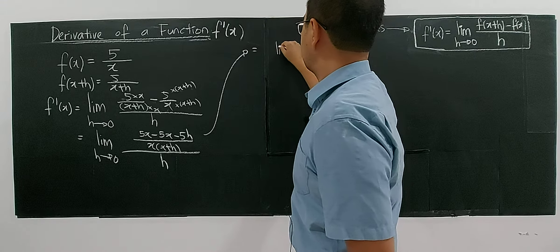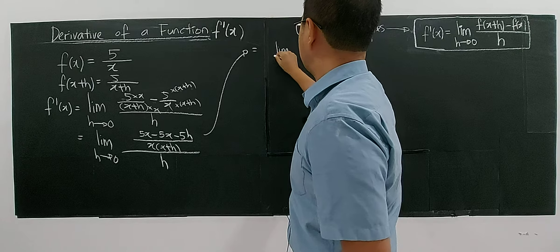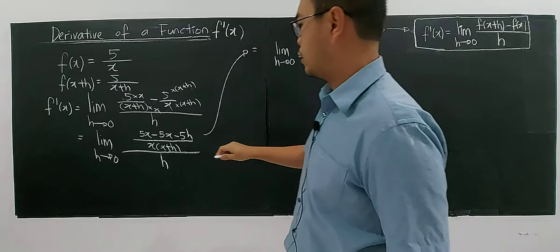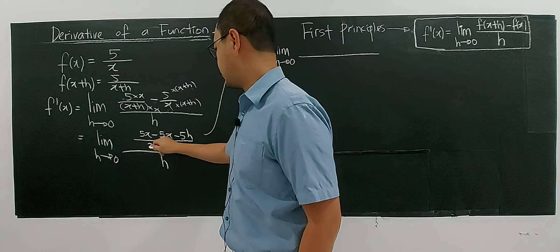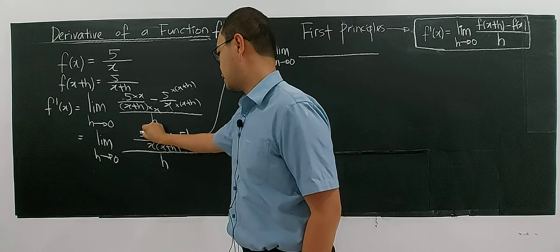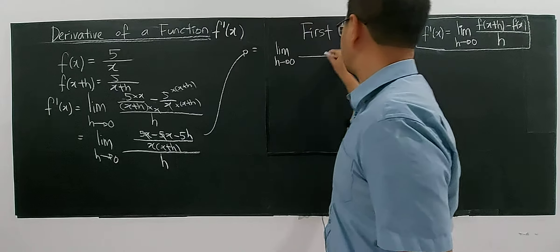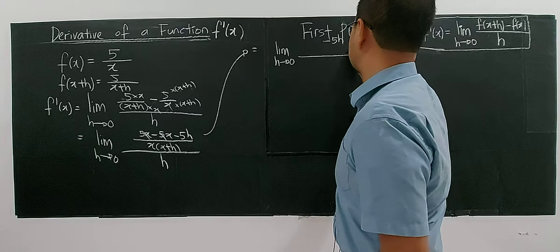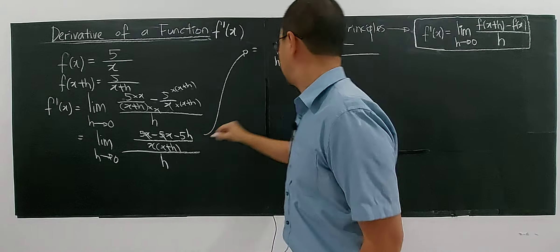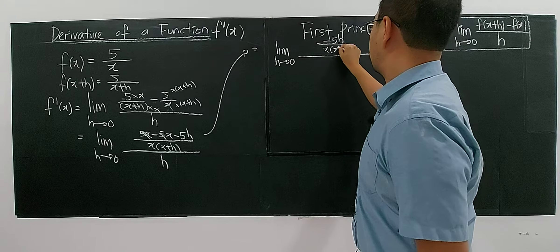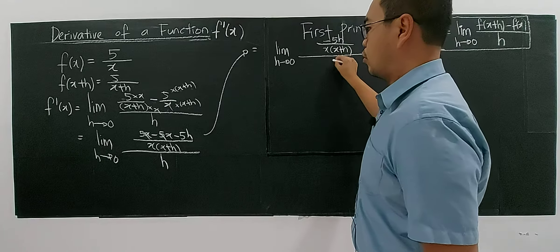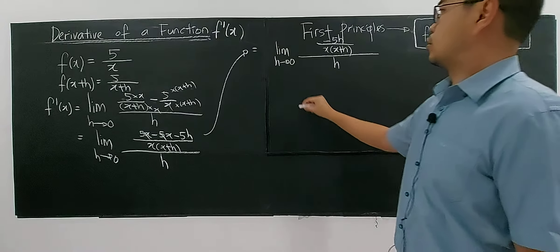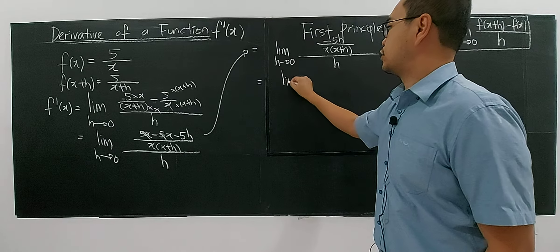This equals the limit as h approaches zero. On top, the 5x and negative 5x cancel out to zero, leaving negative 5h. So we have negative 5h divided by x(x+h), all over h. I can rewrite this fraction.